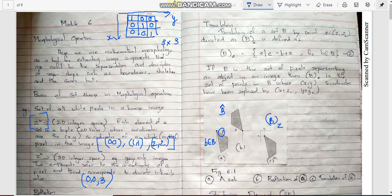That is the basics of set theory, 2D space, 3D space, reflection and translation, which are the very basics of module 6. That is all for this lecture. Thank you for listening.